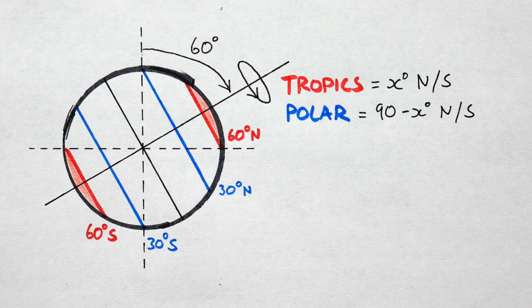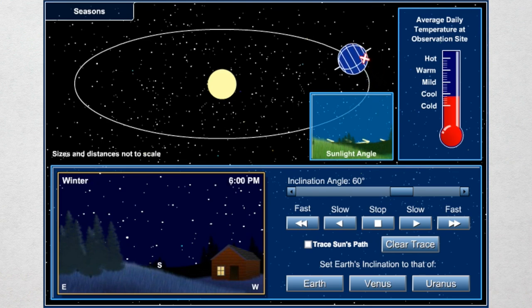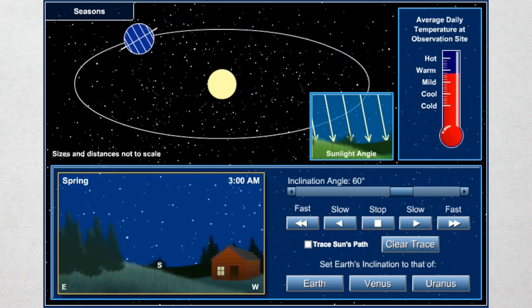The poles now experience equatorial conditions and the equator experiences polar conditions. Antarctica would be a rainforest and the Sahara a vast ice field. Again, check out the temperature swings and the path of the sun.